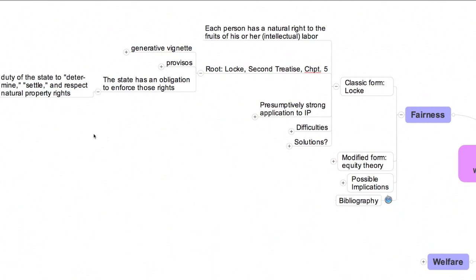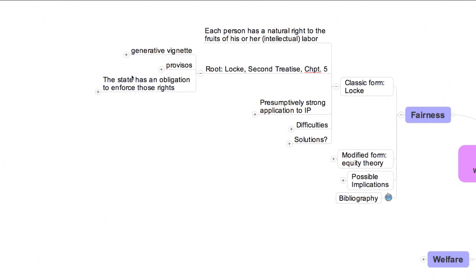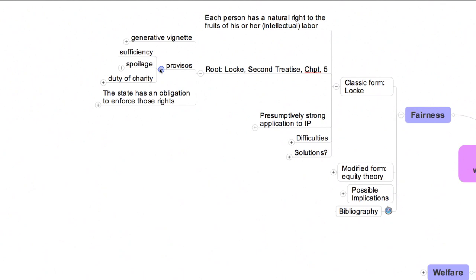According to Locke, the ability of a person to acquire natural property rights in this fashion is, however, limited in three ways. These limitations are commonly known as provisos. The first is known as the sufficiency proviso. According to Locke, the acquisition of natural property rights by the farmer only occurs if he has left, as you'll recall, as much and as good for others. This restriction is analytically very important, as we'll see. But to Locke, it did not seem especially problematic, because at the time he wrote, the world contained lots of what Locke thought of as unowned land, most notably in North America.